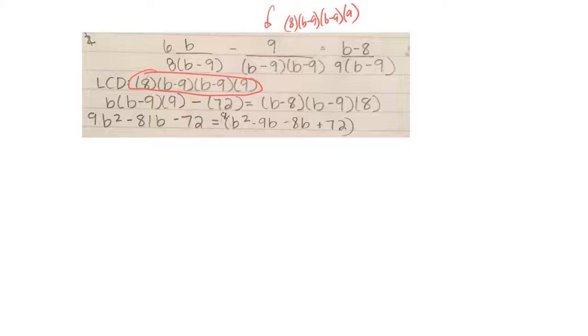So the b minus 9 cancels that one, and this one cancels that one. So what I have left here is 9 times 8 times another 9.